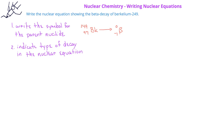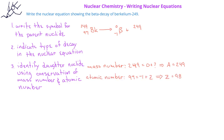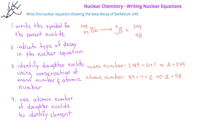The beta particle has a mass number of 0 and an atomic number of minus 1. Since mass number and atomic number must be conserved, the reactant side has a mass number of 249, and the beta particle contributes 0, so the daughter nuclide must also have a mass number of 249. For the atomic number: berkelium has 97, and the beta particle has minus 1, so 97 minus negative 1 gives the daughter nuclide an atomic number of 98. Element 98 on the periodic table is californium, symbol Cf. Therefore, berkelium-249 undergoes beta decay to form californium-249.